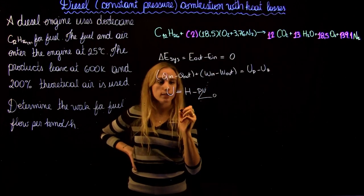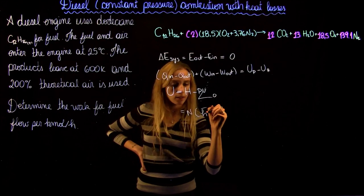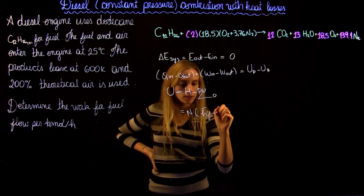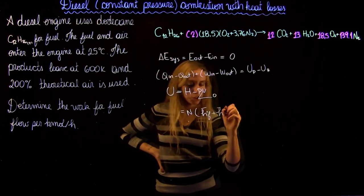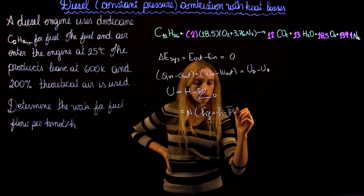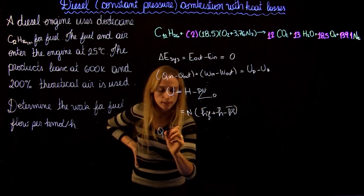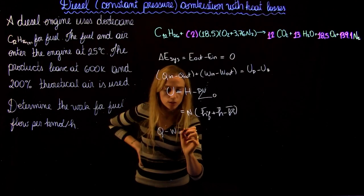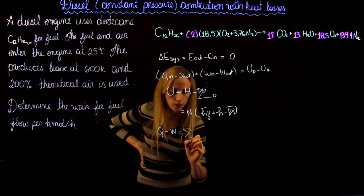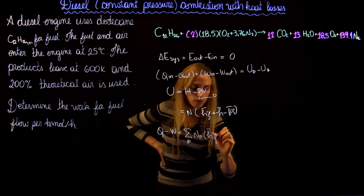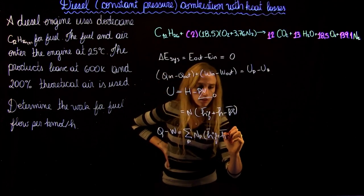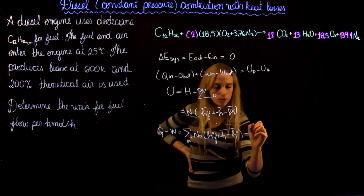And we can rewrite this as the number of moles times the enthalpy of formation plus the enthalpy of the situation minus the reference enthalpy. We can rewrite this equation as Q in minus work out equals the sum of the product NP times H enthalpy plus H enthalpy minus H, minus the reactants.